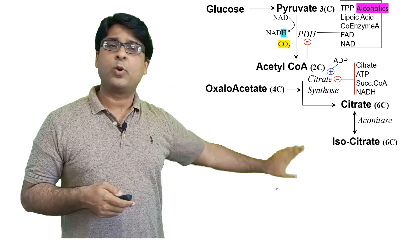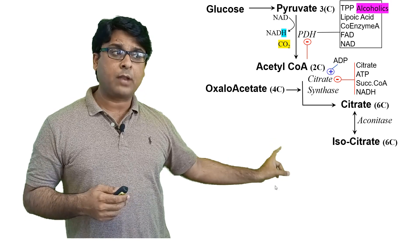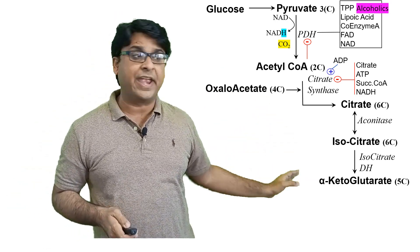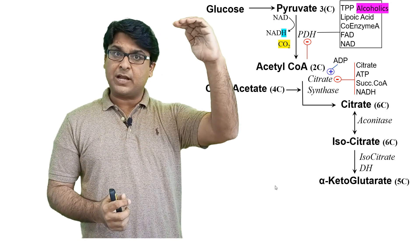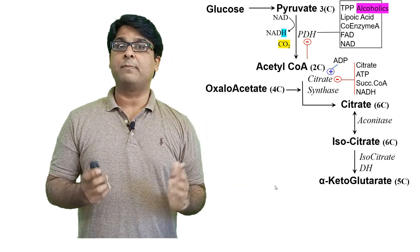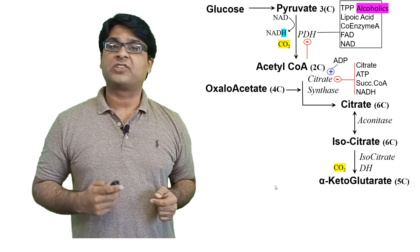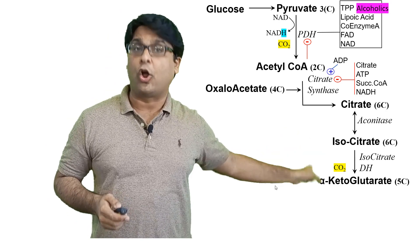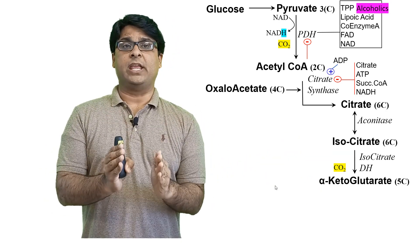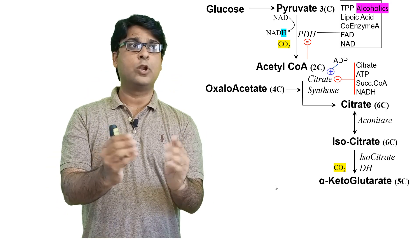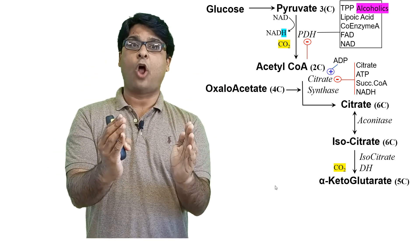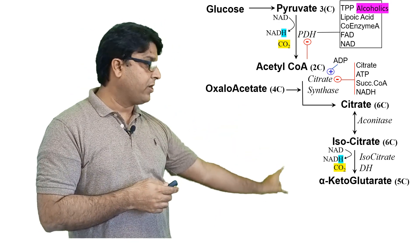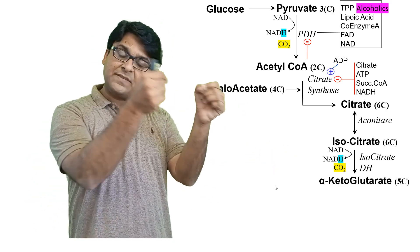Citrate is converted into another molecule called isocitrate — still a 6-carbon compound — by an enzyme called aconitase. This 6-carbon compound is then converted into alpha-ketoglutarate, which is a 5-carbon compound. Going from 6 to 5 carbons means one carbon is lost as carbon dioxide. The enzyme catalyzing this reaction is isocitrate dehydrogenase, and since it is a dehydrogenase, NAD is converted into NADH — a high energy electron has been transferred.